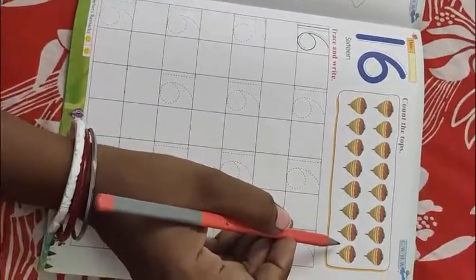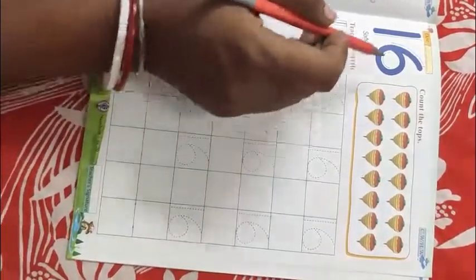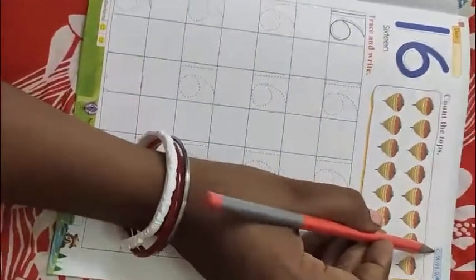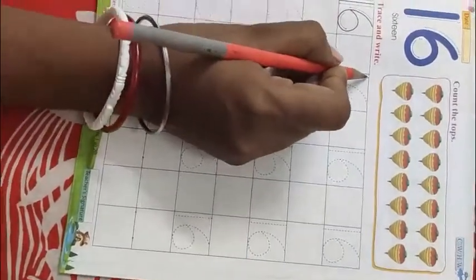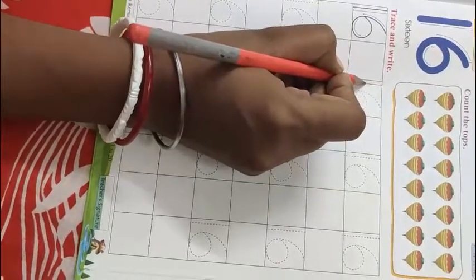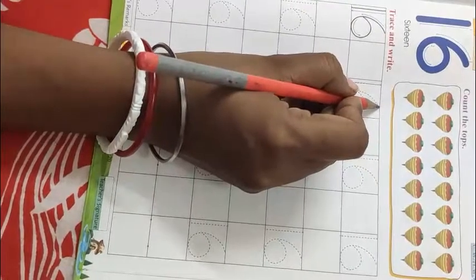So now we will write number 16. Before that I will remind you to put the date here in the given box and put a tick mark on CW. Okay. So children write with me. First we will write number 1, then number 6.